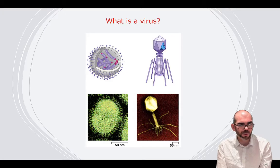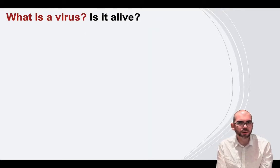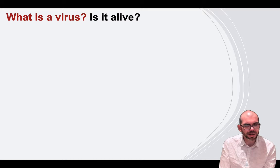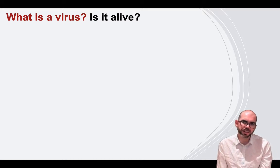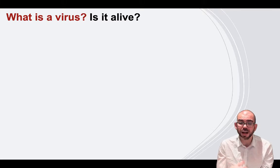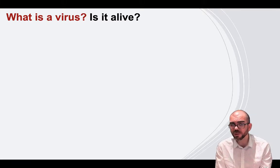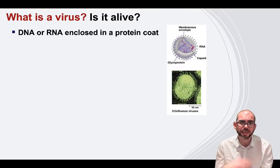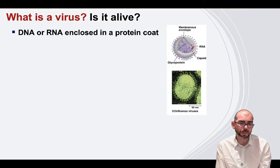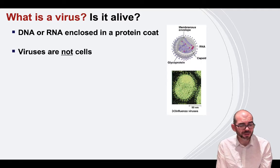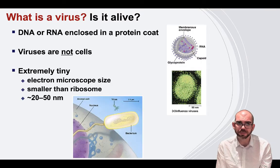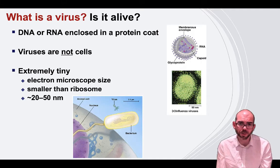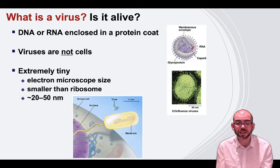Let's look now at viruses. The question of whether a virus is even a living thing is still open. Living things are defined by criteria like being a cell and having a metabolism — viruses don't meet all those criteria. They do have genetic material: viruses are made of either DNA or RNA encased in a protein coat, but they're not cells — they're not the smallest unit of life. They're also extremely tiny — even smaller than a prokaryote, which itself is unbelievably small.